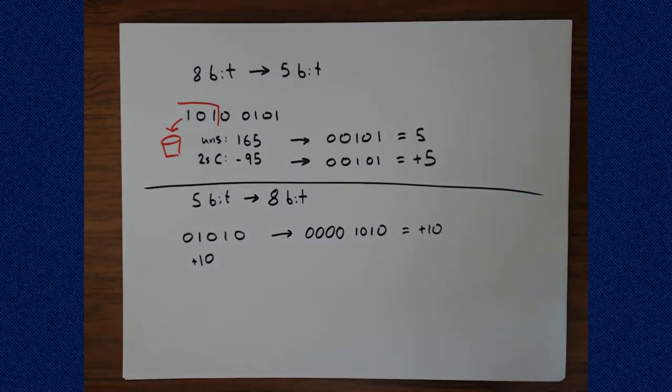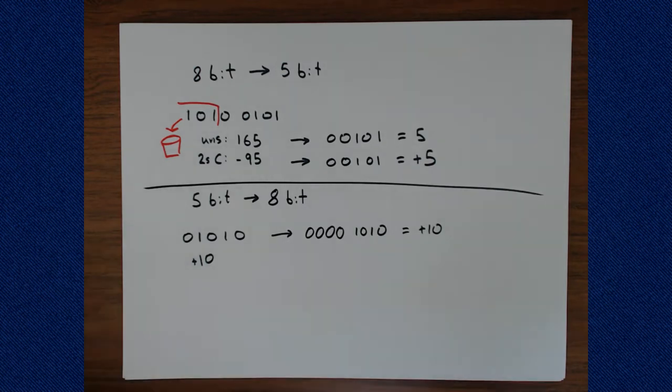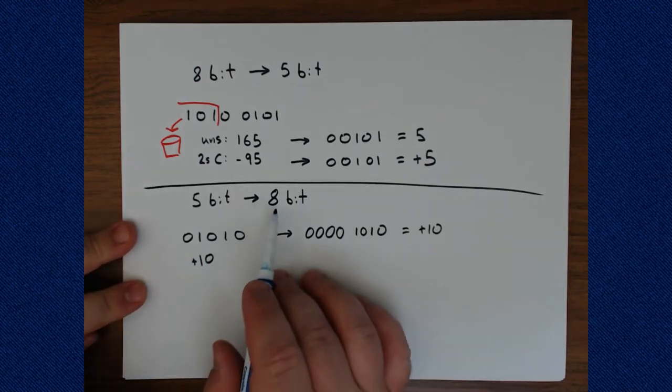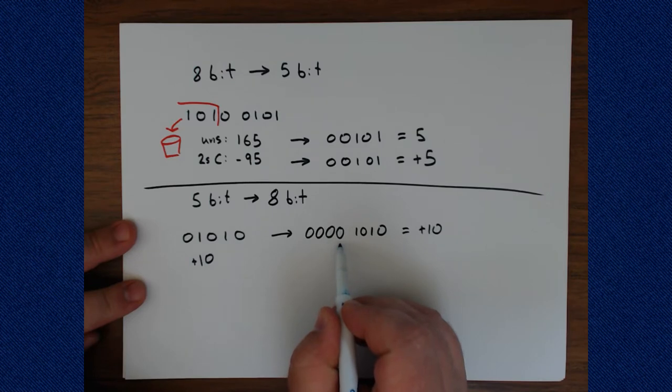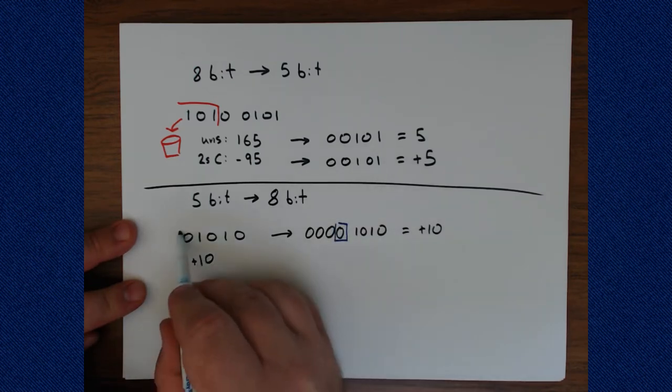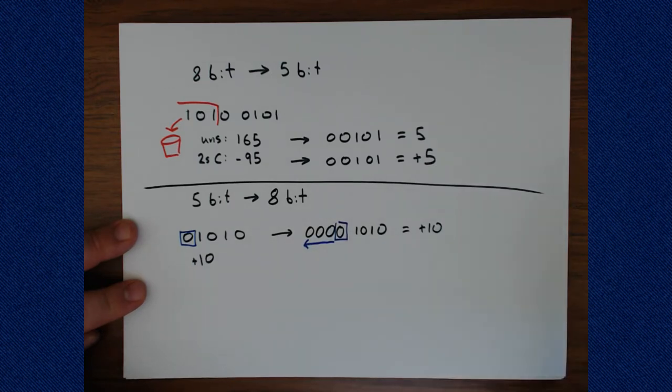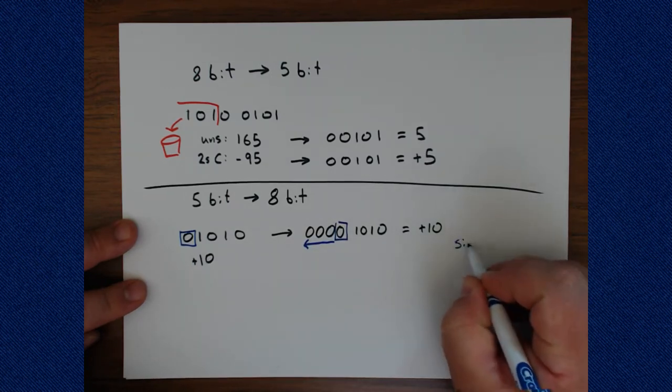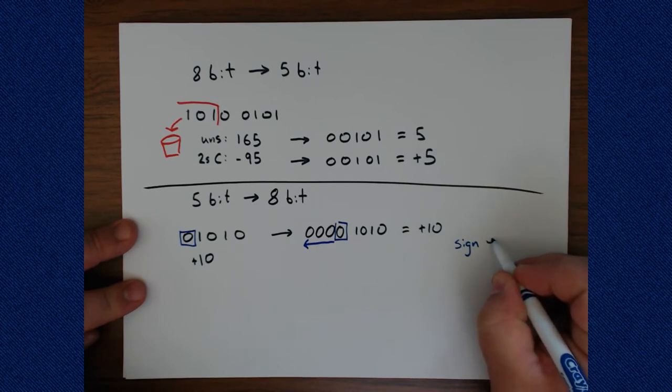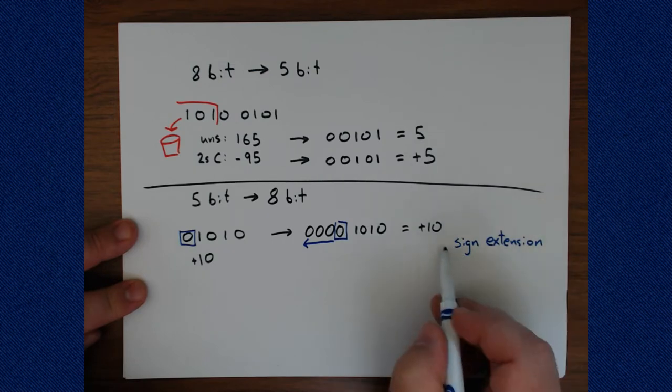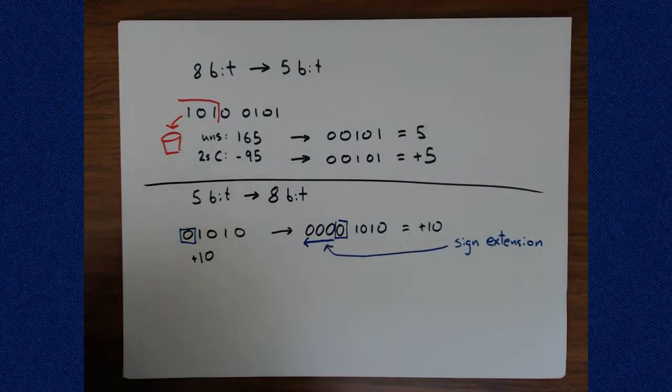But effectively, all we did in the going larger was take the original sign bit. So we identified the sign bit in the original bit pattern. And then we extended it into all the new open bit positions. And this is referred to as sign extension.